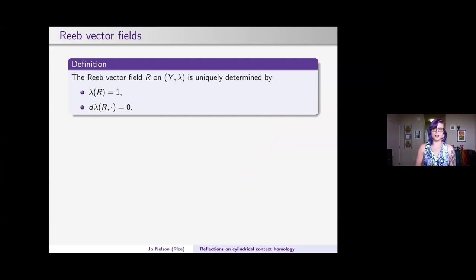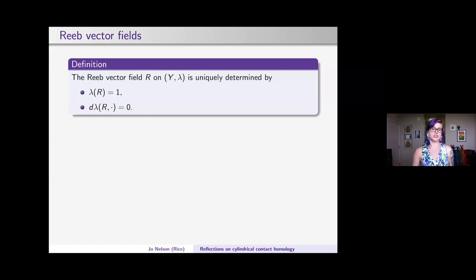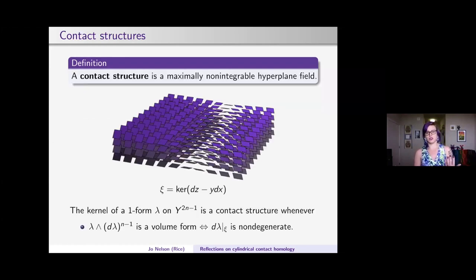For this talk we're interested in building a chain complex out of periodic orbits. The Reeb vector field plays the role that the Hamiltonian vector field plays in symplectic geometry, and the Hamiltonian role is played by the choice of contact form. The Reeb vector field is uniquely determined by: lambda of R equals one, and the contraction of d lambda with R equals zero. That second equation tells us the flow of the Reeb vector field preserves the contact planes.